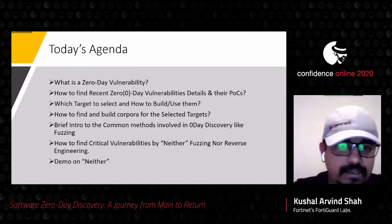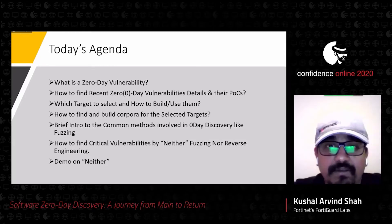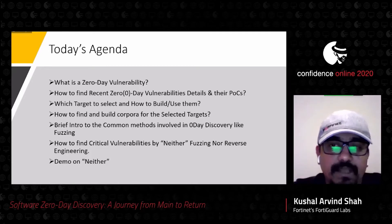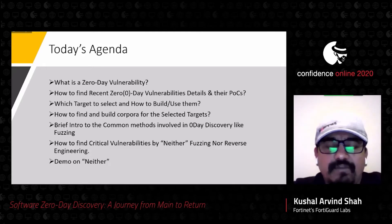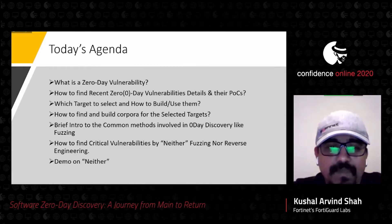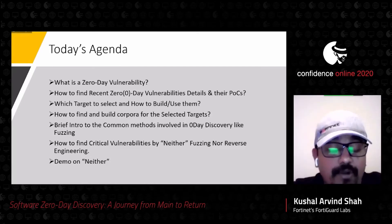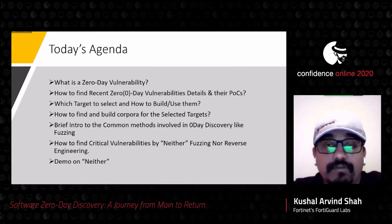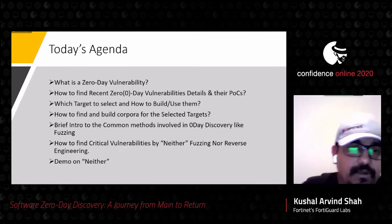Today's agenda: what is a zero-day, how do you find zero-day vulnerabilities, recently disclosed zero-day bugs and their POCs, which targets to select, how to build or use them, how to find and build corpus for selected targets, a little intro on common methods like fuzzing, and lastly, how to find critical bugs in popular products by not fuzzing or reversing — basically doing nothing and finding a vulnerability.